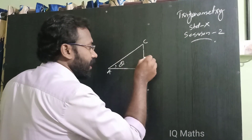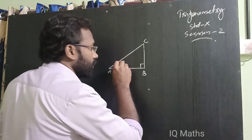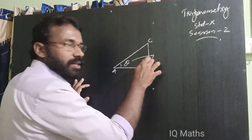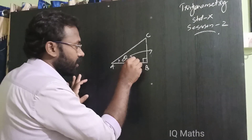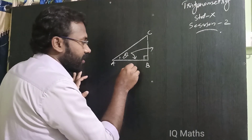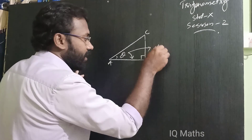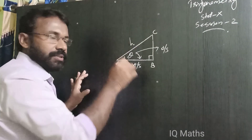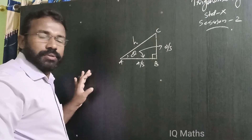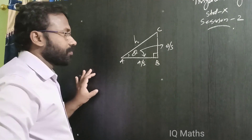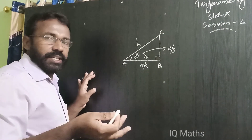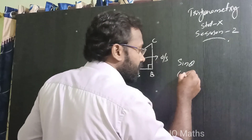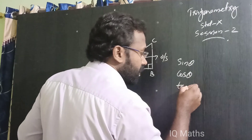The side opposite to this angle theta we will take as the opposite side, this side as the adjacent side, and this will be the hypotenuse — the side opposite to 90 degrees. The primary ratios are sin theta, cos theta, and tan theta.